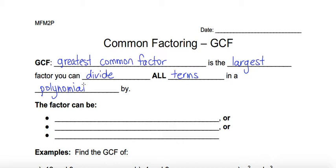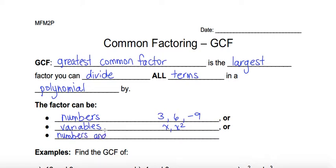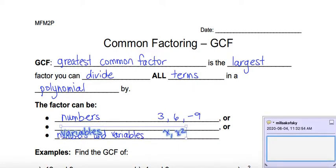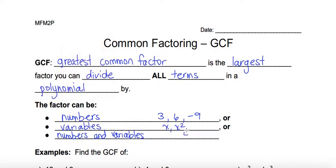The greatest common factor can be a number — for example, it could be 3, it could be 6, it could be negative 9. It could be a variable, so it might be x or x squared. Or it could be a combination of numbers and variables, so it might look like 4x or negative 2x squared. Those are some examples of what your greatest common factor could look like.